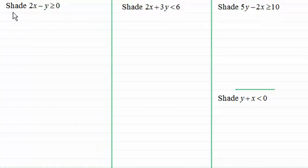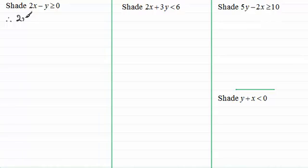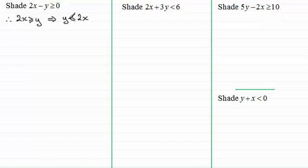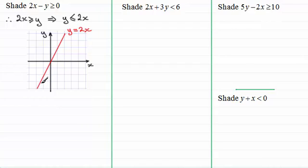In this first example we're asked to shade the region given by the linear inequality 2x minus y is greater than or equal to zero. Whenever you've got zero on the right-hand side, I would suggest you make y the subject. So we get 2x is greater than or equal to y, and rearranging gives y is less than or equal to 2x. The next step is to draw the graph of y equals 2x — a straight line with gradient 2 passing through the origin.